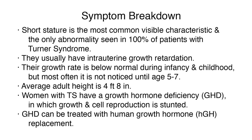Short stature is the most common visible characteristic and the only symptom seen in 100% of Turner Syndrome patients. Patients usually have intrauterine growth retardation, and their growth rate is below normal during infancy and childhood, but most often is not noticed until age 5 to 7. The average adult height is 4 foot 8 inches. Women with TS have a growth hormone deficiency, or GHD, in which growth and cell reproduction is stunted. GHD can be treated with human growth hormone replacement.